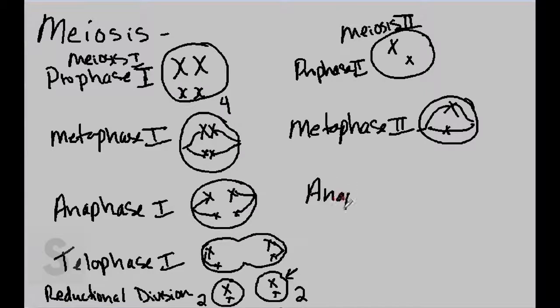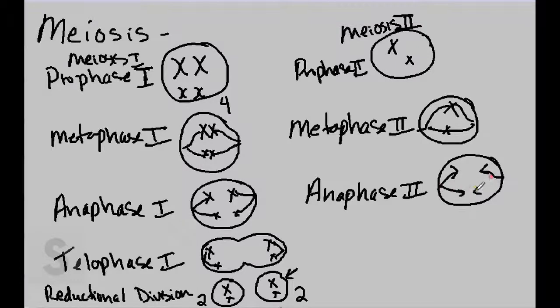We have anaphase II, where the chromosomes get pulled apart and start to travel to each of the poles.